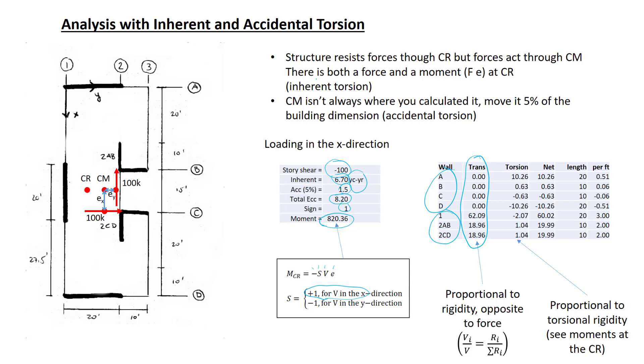We saw previously that the shear in each wall is proportional to the rigidity of that wall, so wall 1, which is 20 feet long and much more rigid, takes a much larger share of the force.